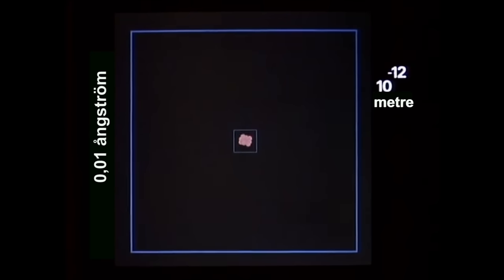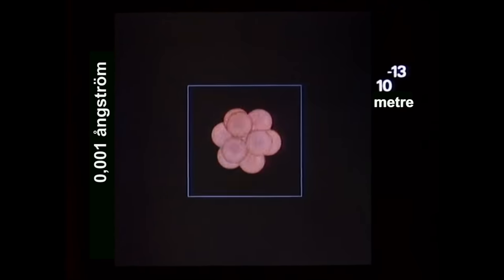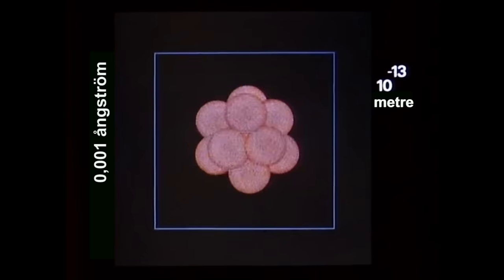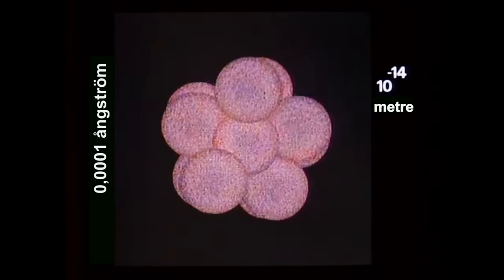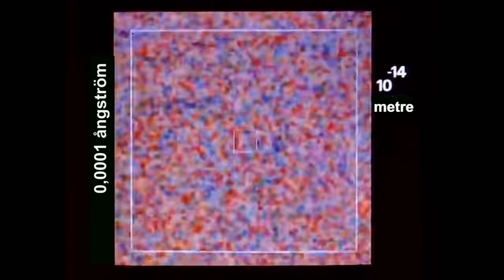Evrensel modüller alanındayız. Her çekirdekte protonlar ve nötronlar, her atomda elektronlar var. Atomlar en uzak galaksiye kadar her moleküle bağlanıyor. Sahneyi tek bir proton doldururken şu anki algımızın sonuna ulaşıyoruz. Bunlar yoğun etkileşim içinde bazı zerreler mi?